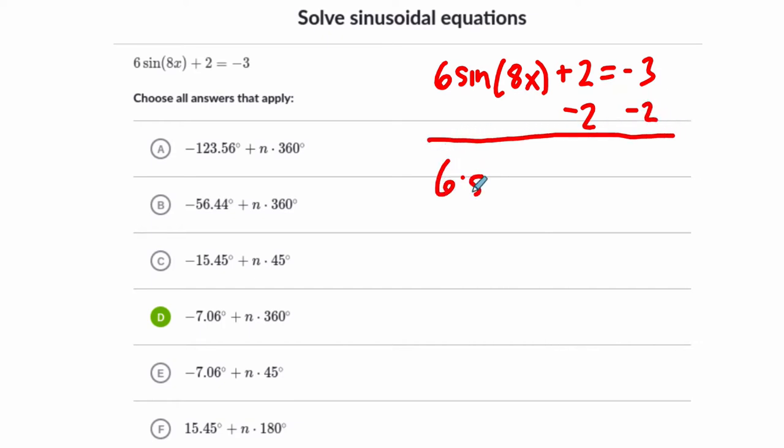Then I get 6 times the sine of 8x equals negative 5. Then I'm going to divide both sides by 6, and the sine of 8x equals negative 5 over 6.